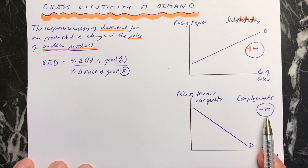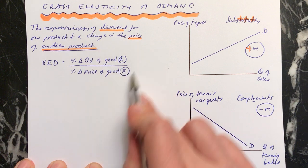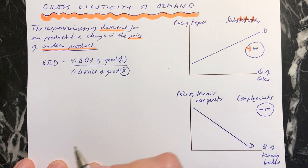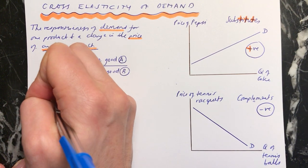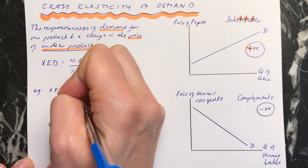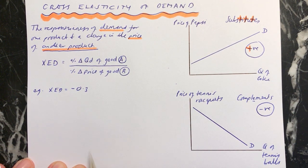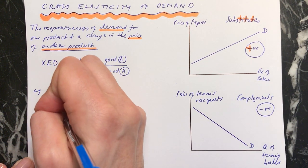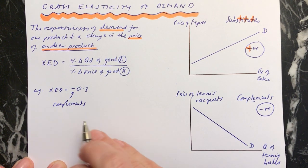Now we can look at different values of cross elasticity of demand when you've done this calculation, and we can tell a lot about the product. To begin with, let's imagine that our value of XED is negative 0.3. Because it's a negative sign, we know that these two products are going to be complements. You are going to buy these two things together.